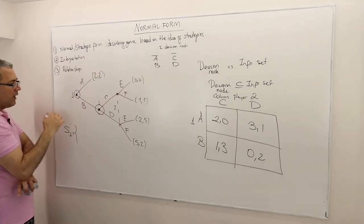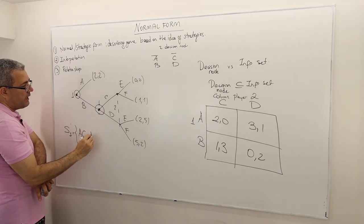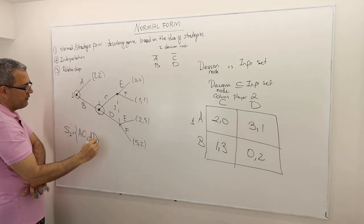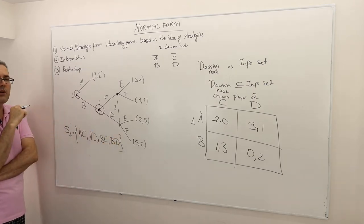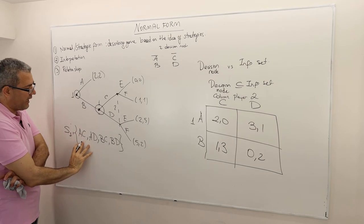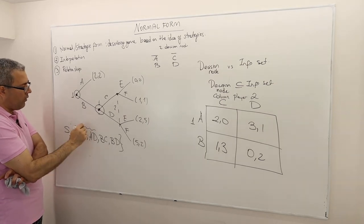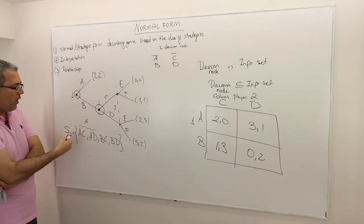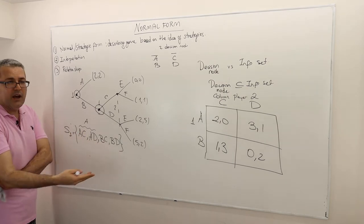Player one's strategies are: AC, AD, BC, and BD. Some might say AC and AD are pointless because if A is chosen the game is over, so why worry about C or D? You could simplify, but let's stick with the formal definition of strategy: a function which maps every information set to an action available at that info set.